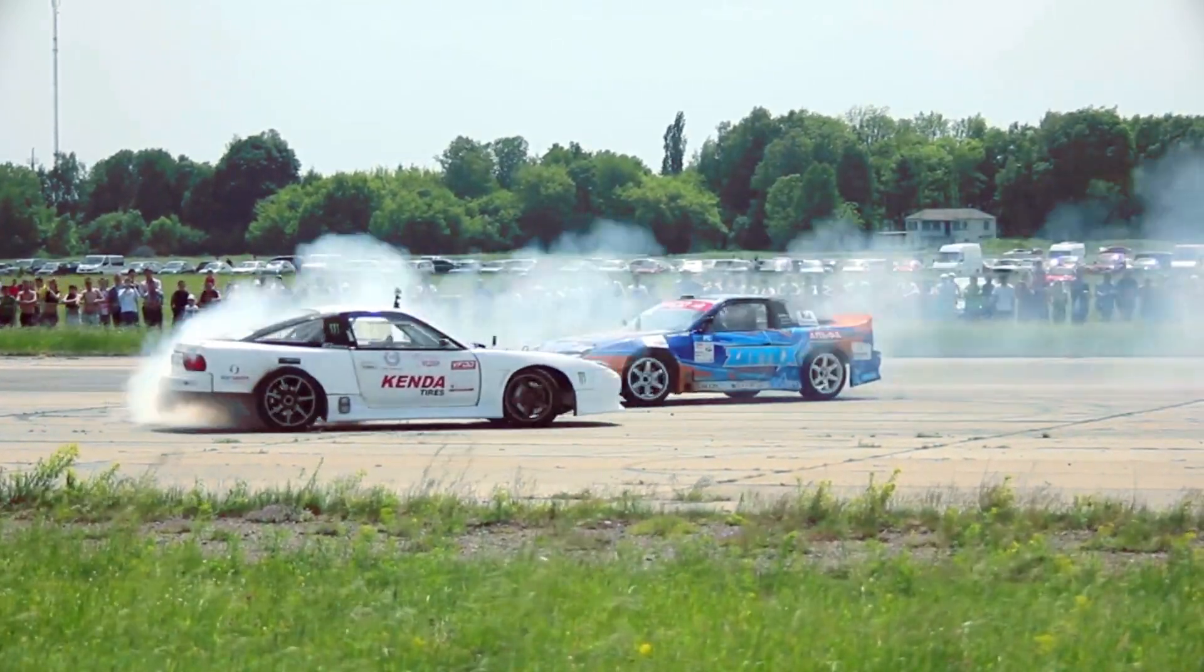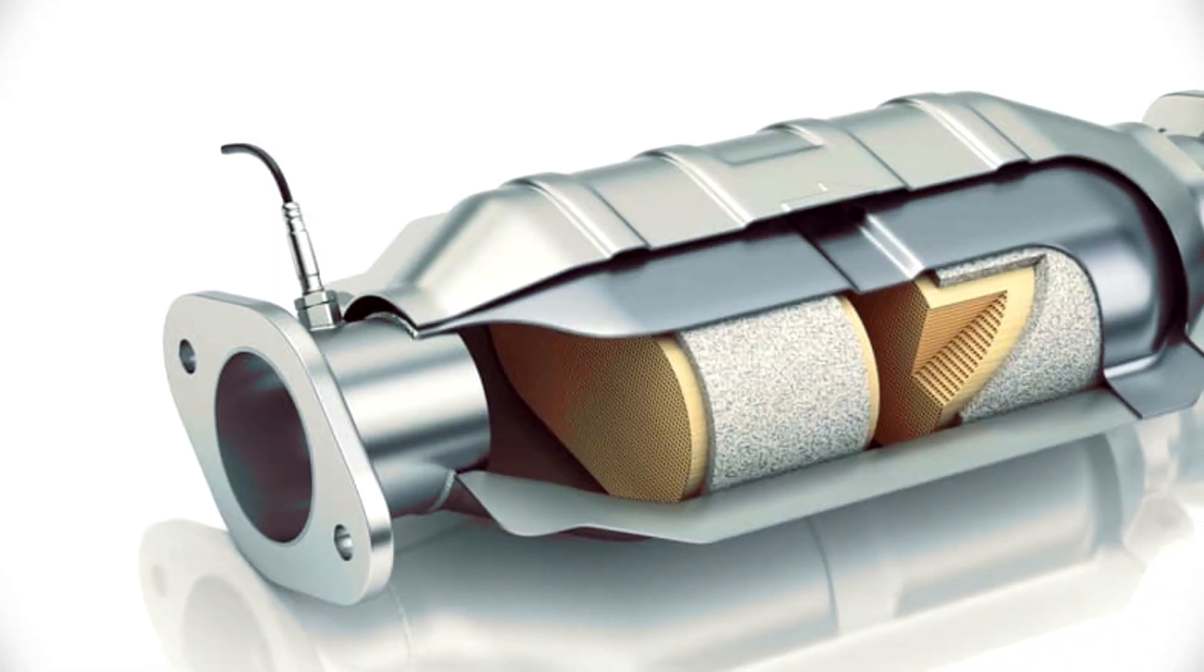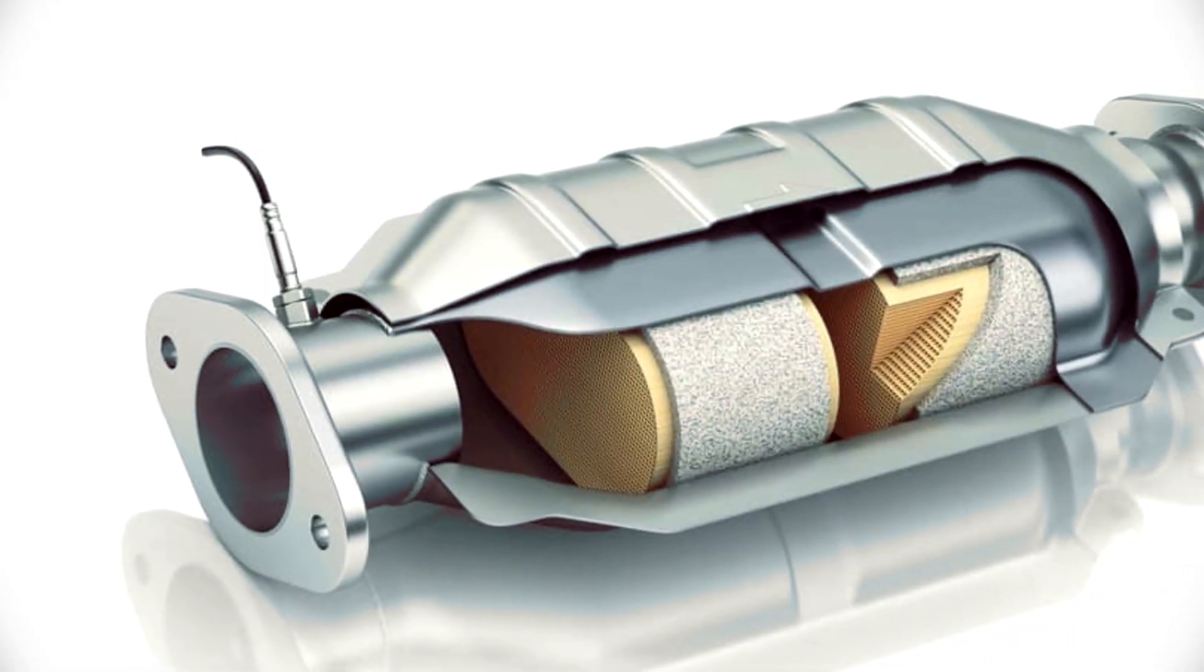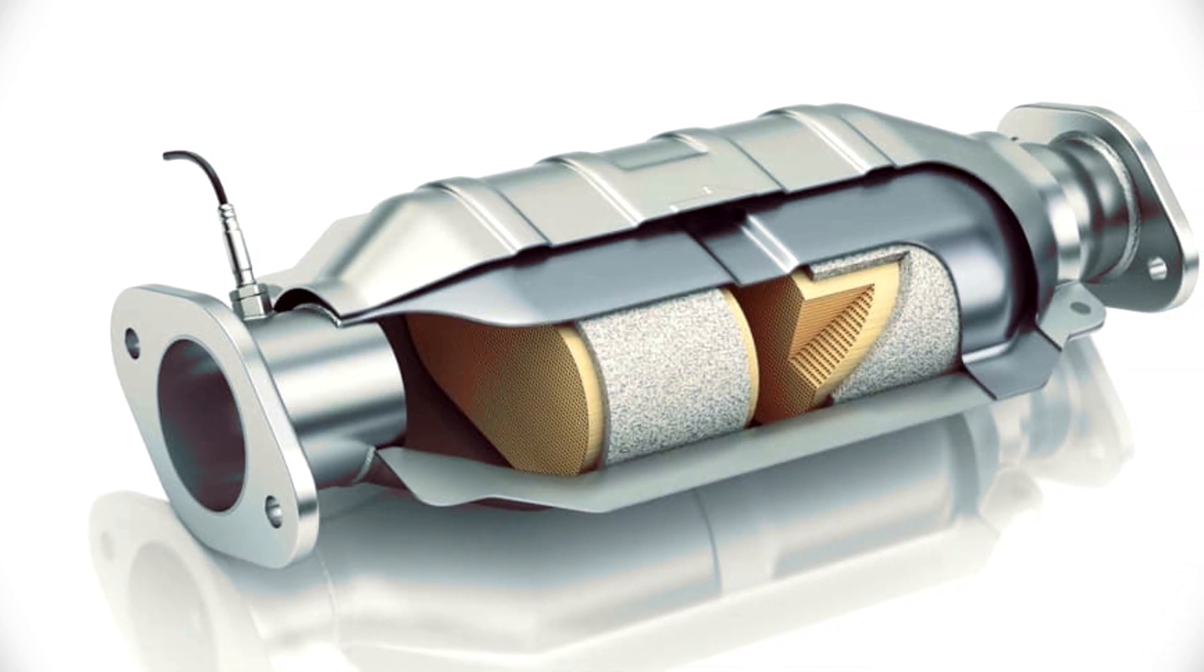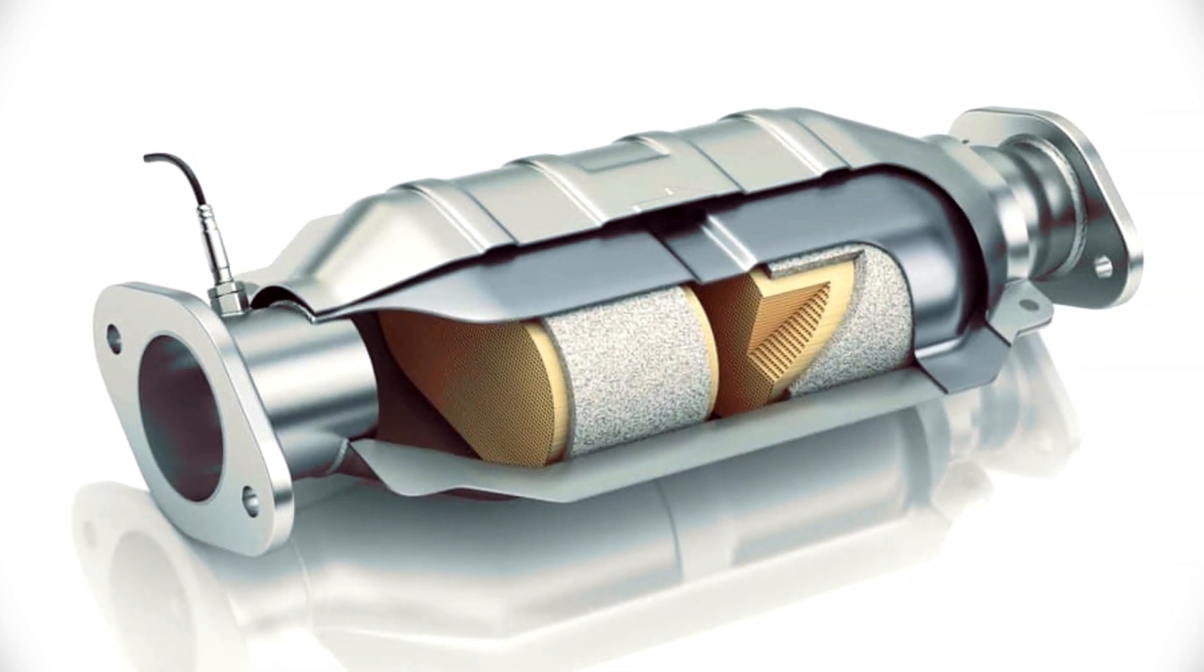This same data is also used to reduce exhaust emissions when both oxygen sensors are paired with the catalytic converter. The ECUs of modern spark ignited combustion engines attempt to maintain a certain air-fuel ratio by interpreting the information gained from the oxygen sensor. Their primary goal is a trade-off between power, fuel economy, and emissions, and in most circumstances is achieved by an air-fuel ratio close to stoichiometric.